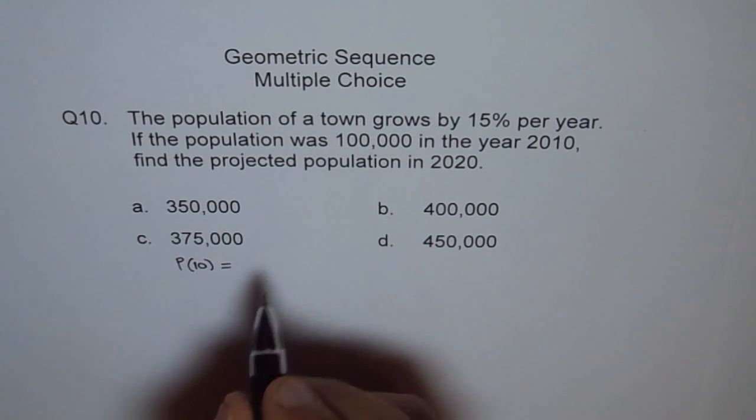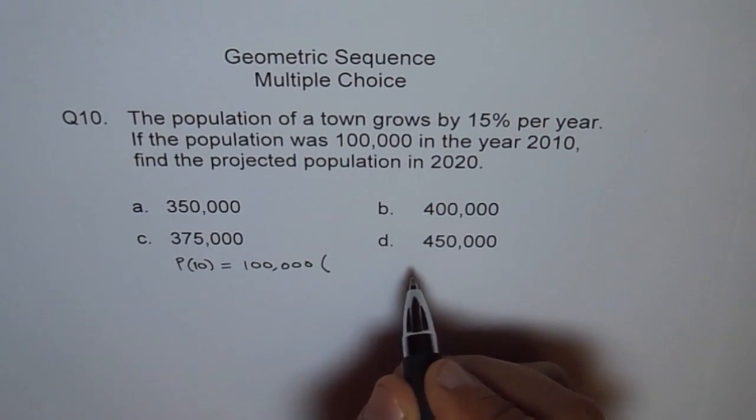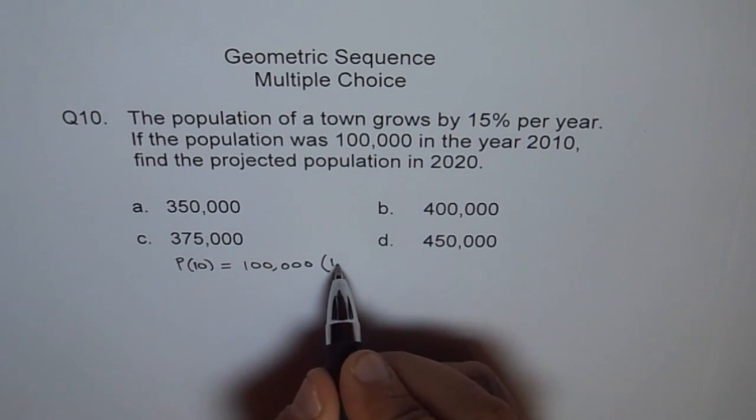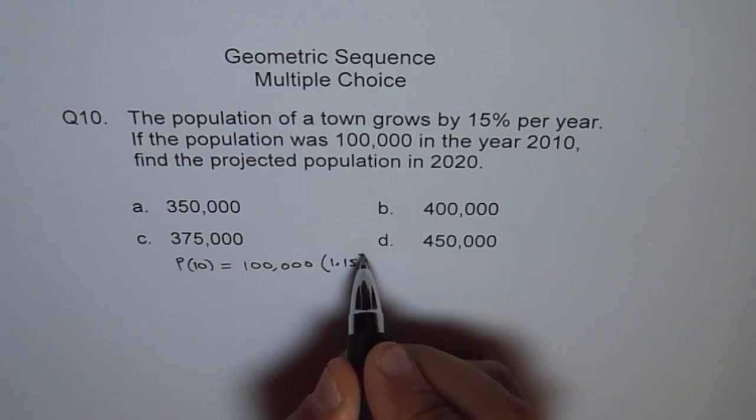Will be equals to initial population which is 100,000 times growth rate. Every year it will get multiplied by 1 plus 15% which is 1.15 to the power of 10.